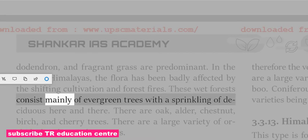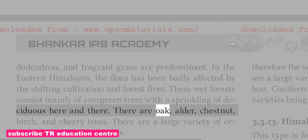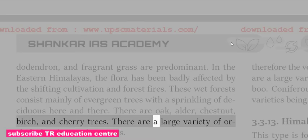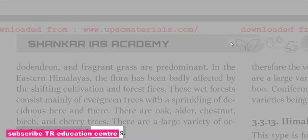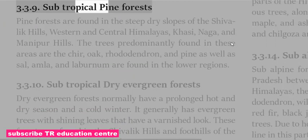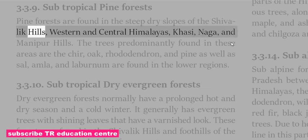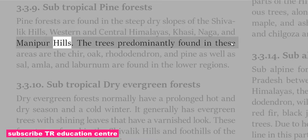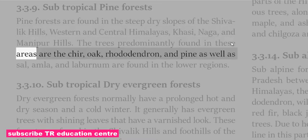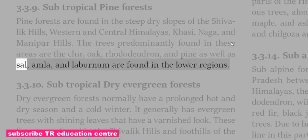Trees with a sprinkling of deciduous species occur here and there, with oak, alder, chestnut, birch and cherry trees. There are a large variety of orchids, bamboo and creepers.